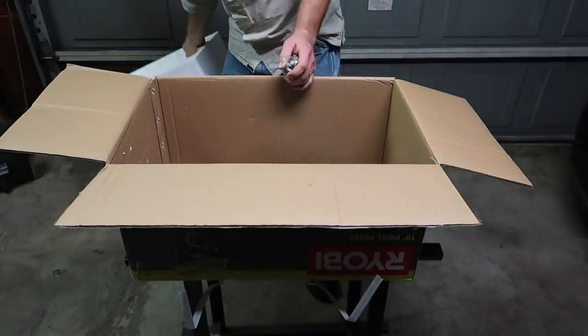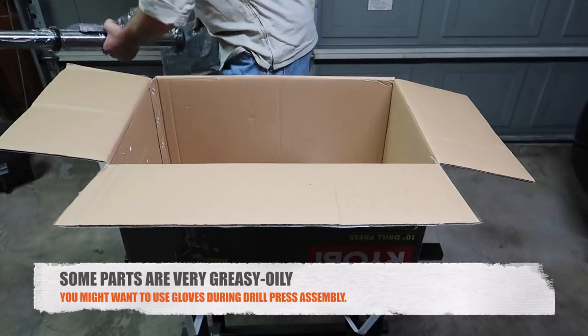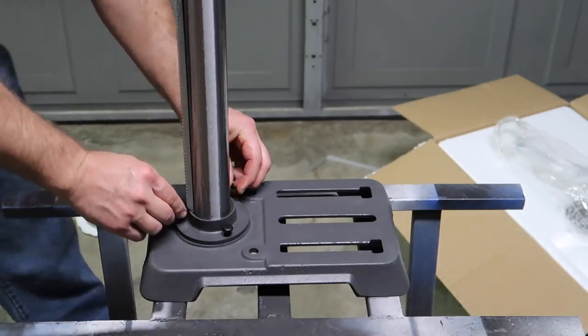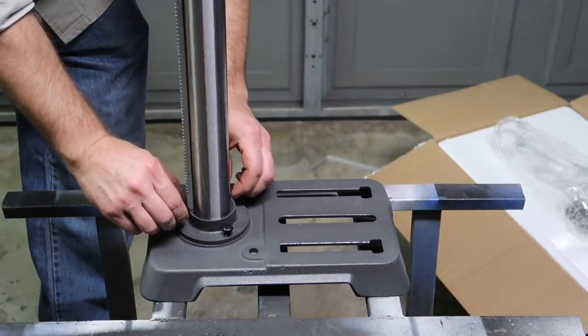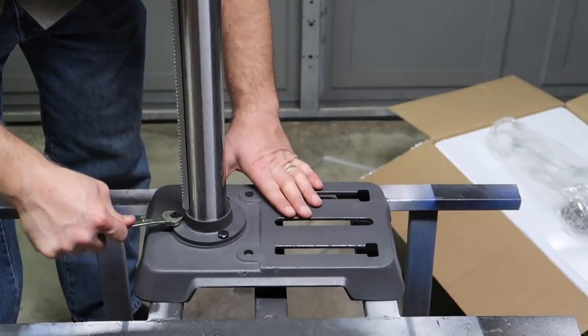In order to assemble this drill press, you'll need some hand tools like a rubber mallet, screwdriver, and some wrenches. Attach the main column to the base with hex bolts. I've used a half-inch combination wrench to tighten the bolts.